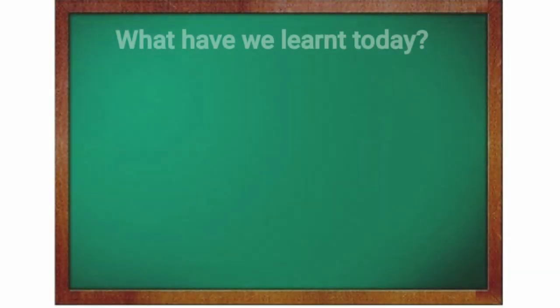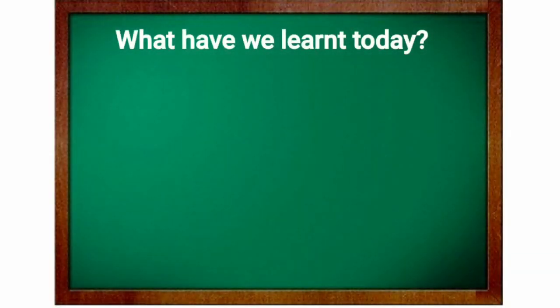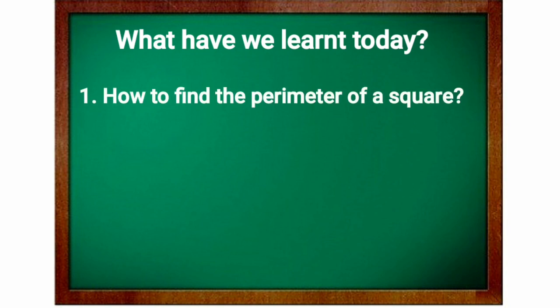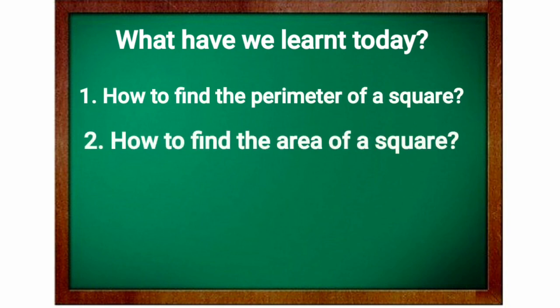Now, kids, what have we learned today? Firstly, we found how to find the perimeter of a square. Then we learned how to find the area of a square.